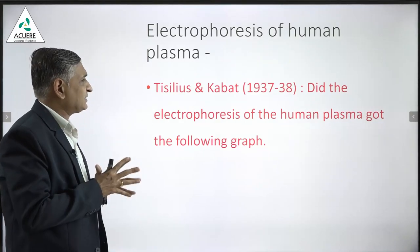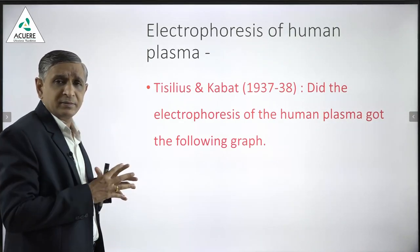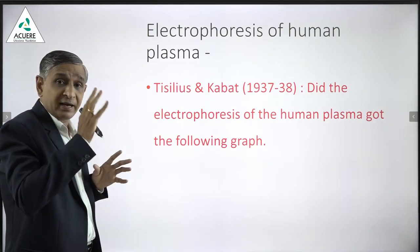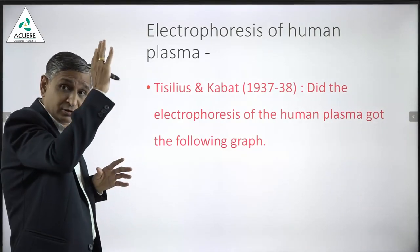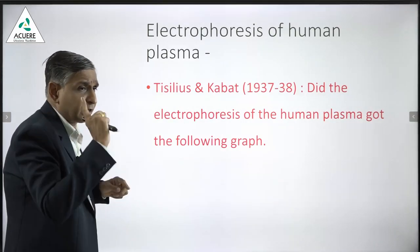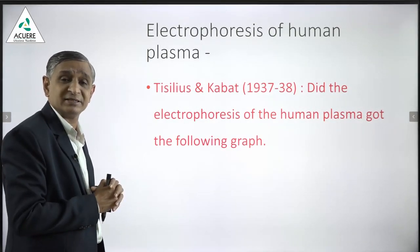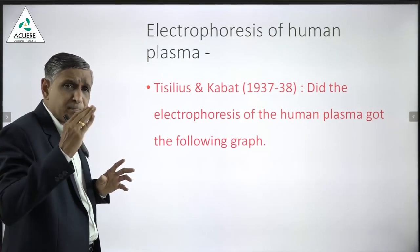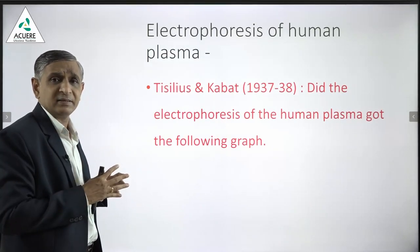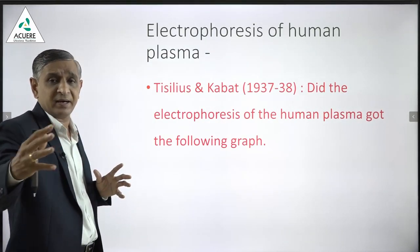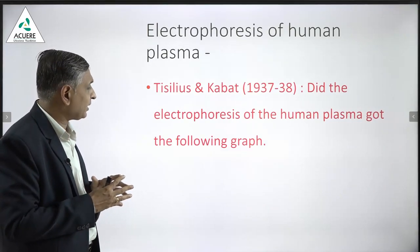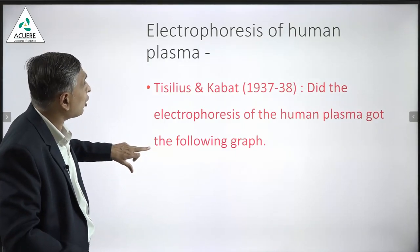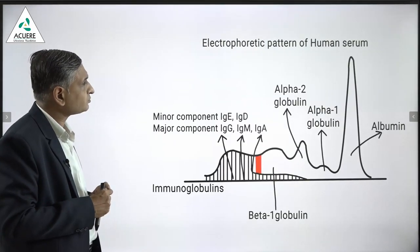Tissilius and Cabot were two scientists who performed electrophoresis of human plasma in 1937–38. They obtained three to four important precipitates at different levels, and the following graph shows the details of that electrophoresis.